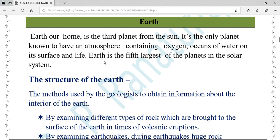Earth, our home, is the third planet from the sun. It's the only planet known to have an atmosphere containing oxygen, oceans of water on its surface, and life. Earth is the fifth largest of the planets in the solar system.